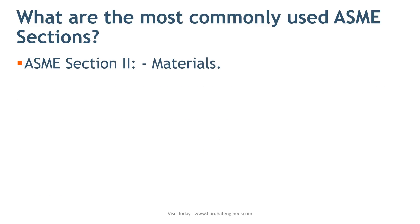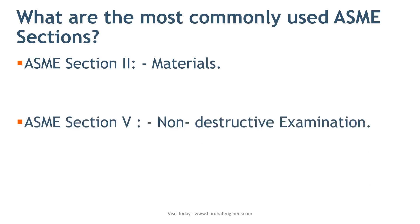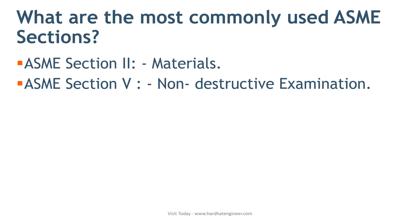Section 2 gives you the list of materials, their properties, and the list of electrodes and wires to use during welding metallic materials. Section 5 gives you the guidelines and procedures for how to conduct non-destructive testing such as ultrasonic testing, radiographic testing, liquid penetrant, magnetic penetrant, eddy current, and visual examination.